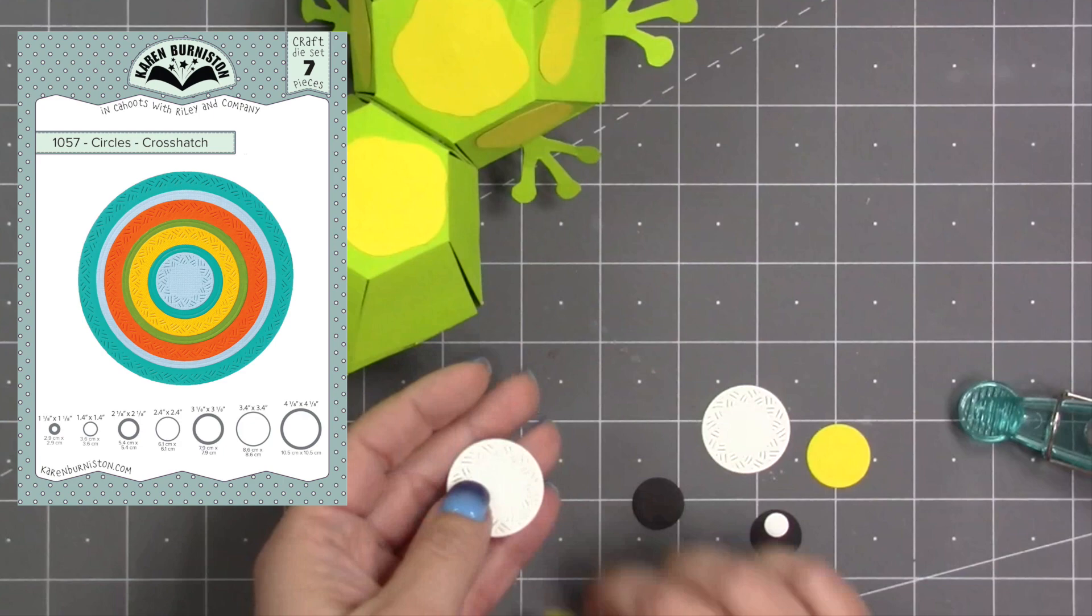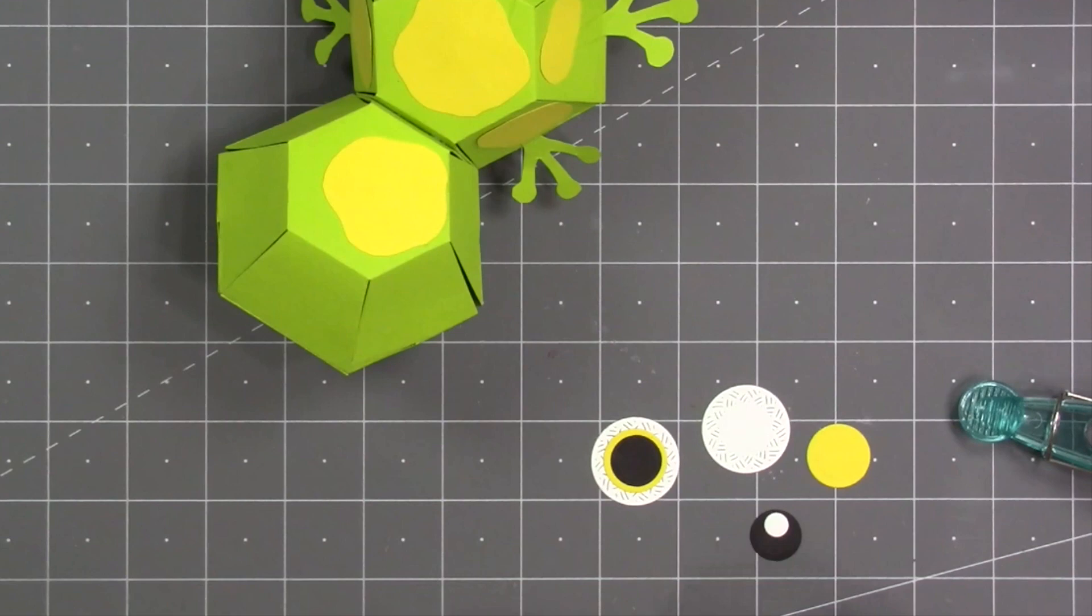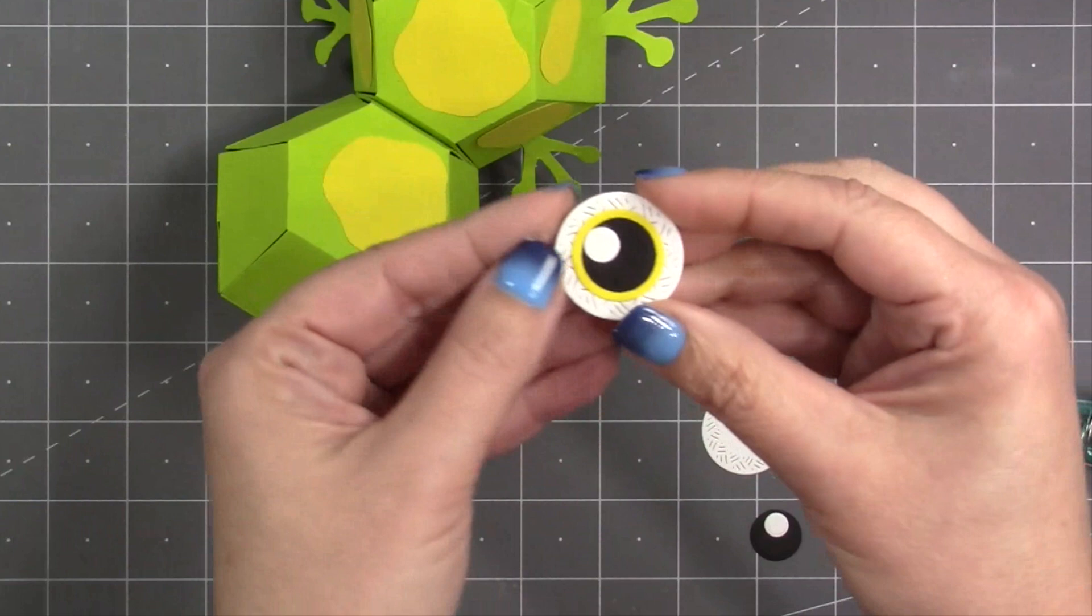I'm using the smallest crosshatch circle from the circles crosshatch set as the base of the eyeballs. Then I'm using the three circles that actually come included in the surprise ball set to layer up on top of that circle to create the big eyes.